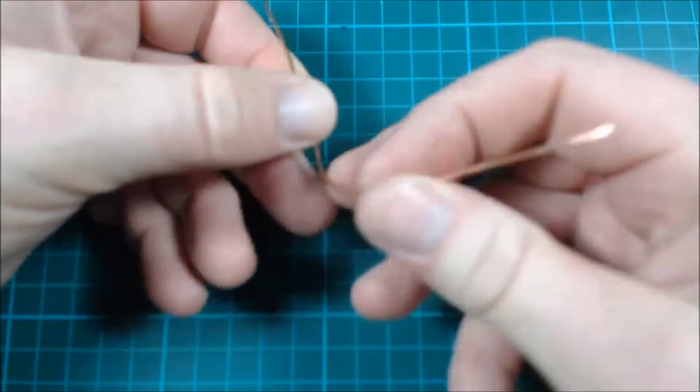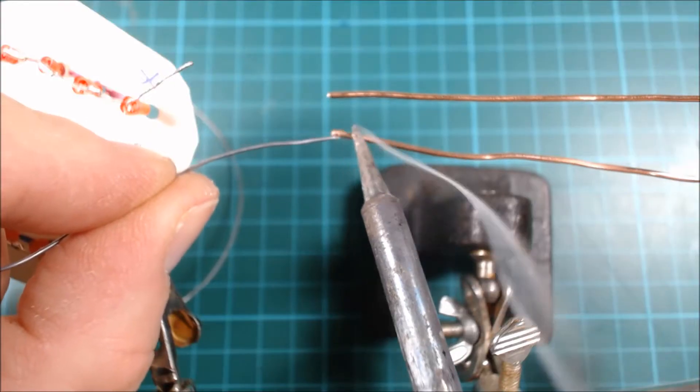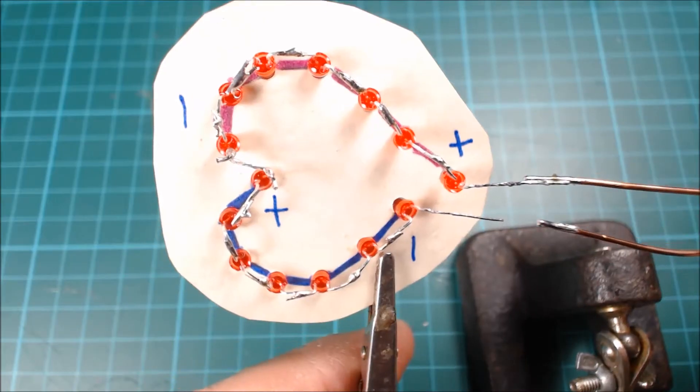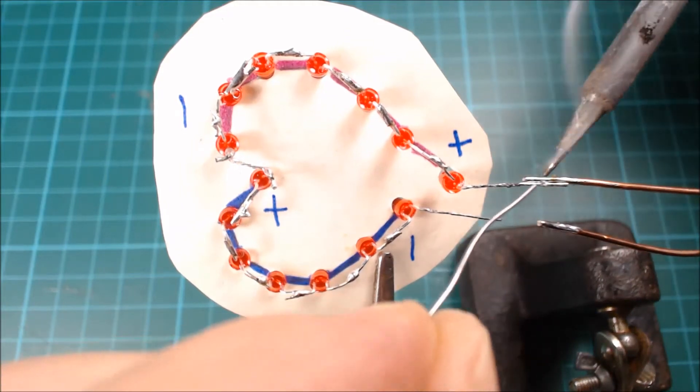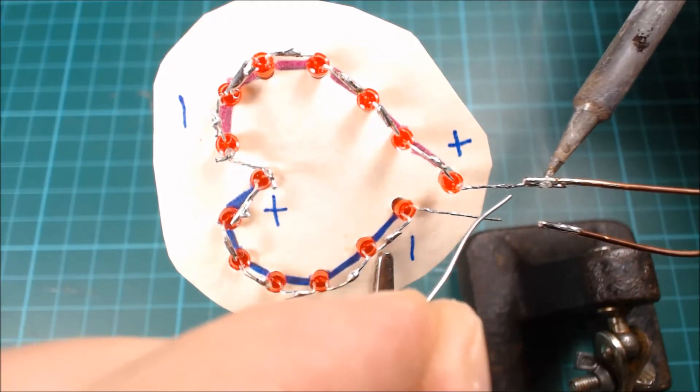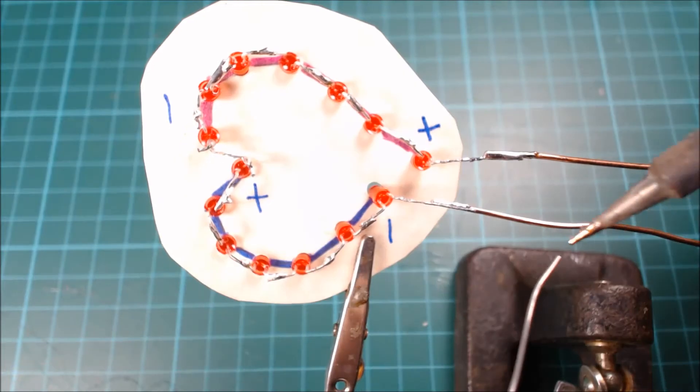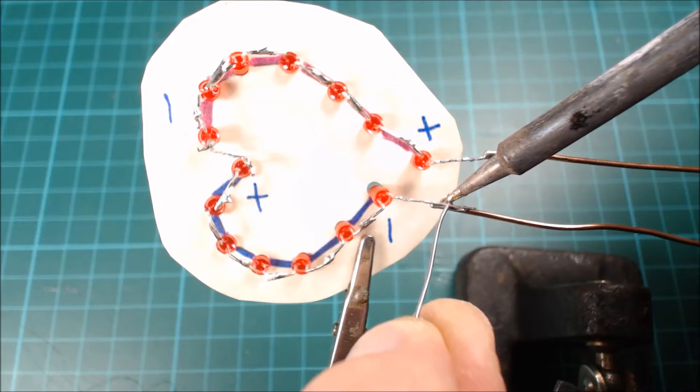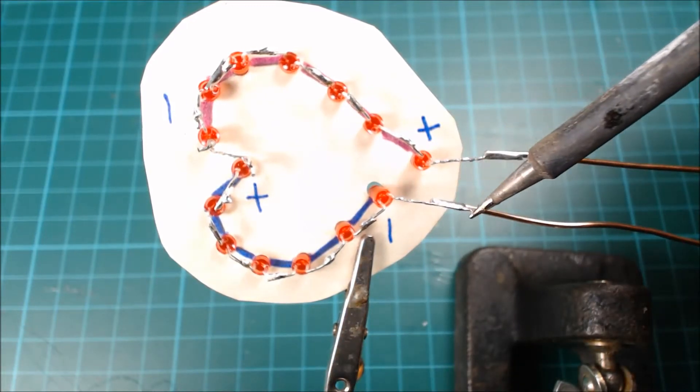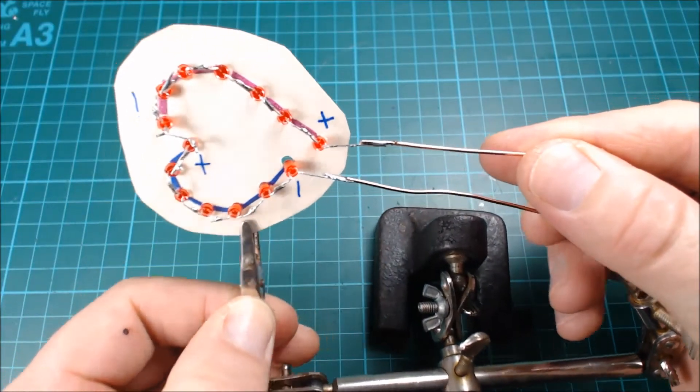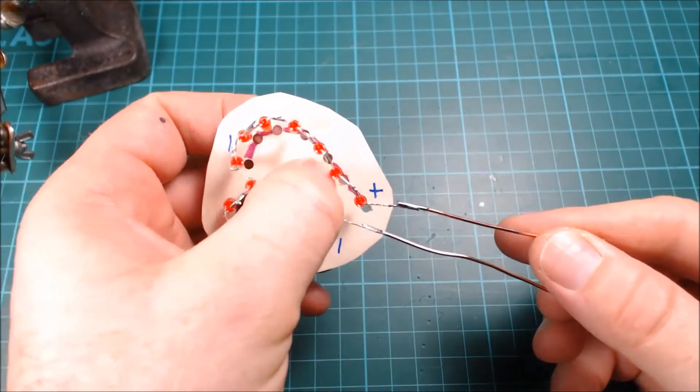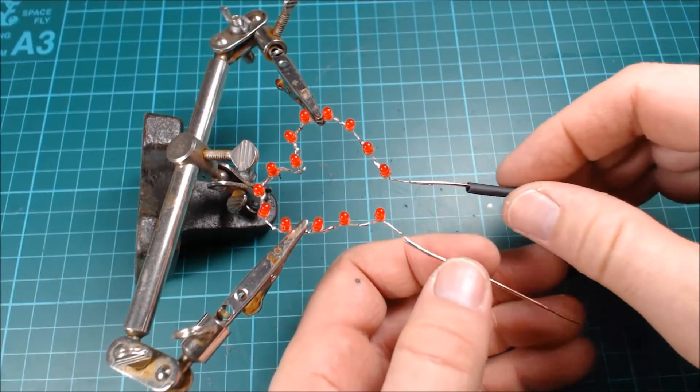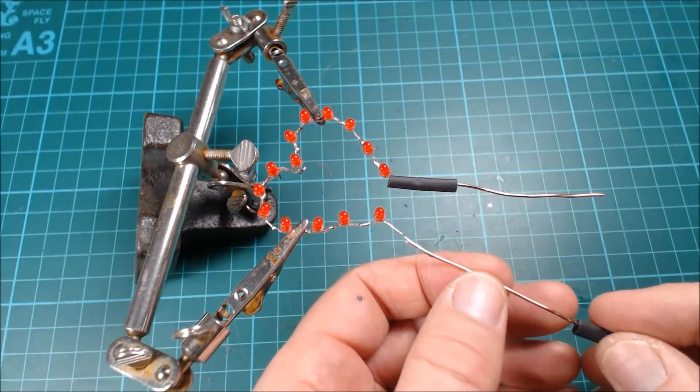Now we need some stiff copper wire, so I've stripped the insulation off some house wire and then tinned the ends ready for soldering to the LEDs. Line the wires up with a helping hand and then solder them in place. The final part of making the LED heart was just to add some heat shrink tubing.